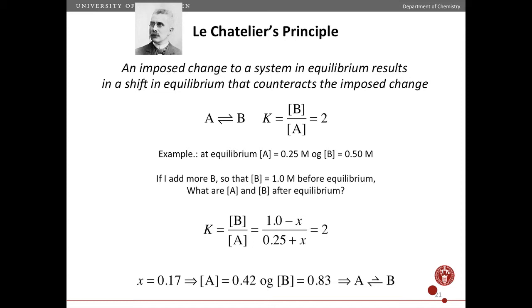That's actually most easily demonstrated by an example. So let's say I have A and B in equilibrium, as you see here, and the equilibrium constant is 2. I just picked that as an example. So let's say that at equilibrium you have 2.5 molar concentration of A and twice that of B, so that your equilibrium constant is 2. So that's one way to achieve this equilibrium.